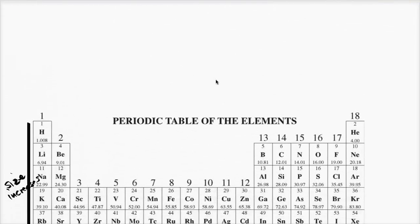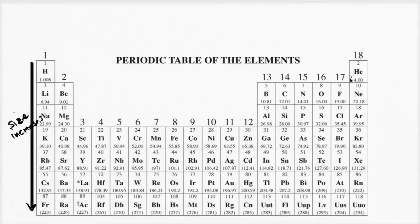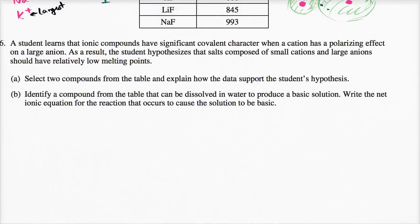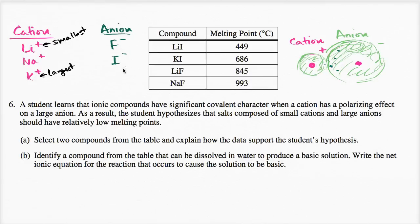Now if you look at the anions — fluorine and iodine are in the same group, and iodine is below it. It has way more electrons, and you've added way more shells, which is actually the important part. Since iodine is larger than fluorine, iodide — which is when they gain an electron — is going to be larger than fluoride. So iodide is larger, and fluoride is smaller.